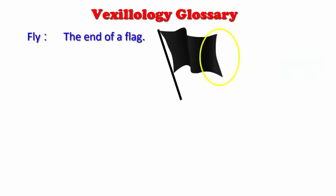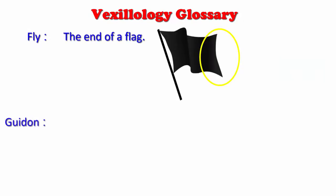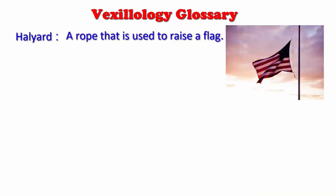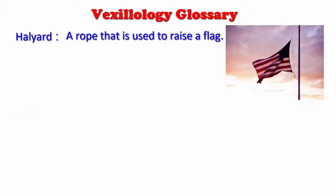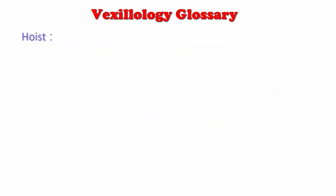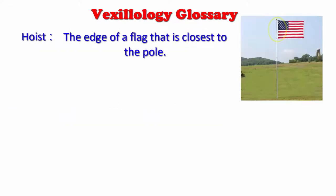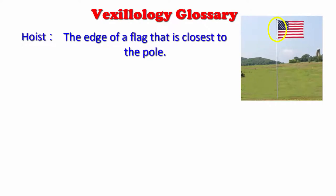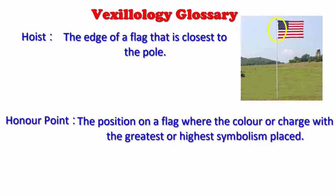Fly: the end of a flag. Guidon: a small swallowtail flag. Halyard: a rope that is used to raise a flag. Header: a heavy cloth strip, usually canvas, sewn to the hoist edge of a flag. Hoist: the edge of a flag that is closest to the pole. Honor point: the position on a flag where the color or charge with the greatest or highest symbolic value is placed.